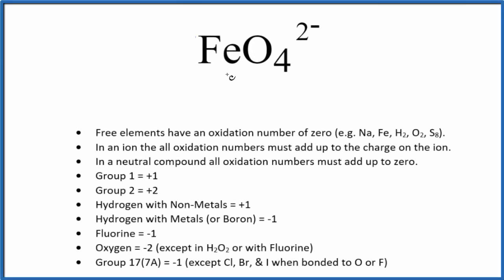Let's find the oxidation number for each element here in FeO4 2-. So we have these general rules here to guide us. We have this 2- up here. This is an ion, and when we have an ion,